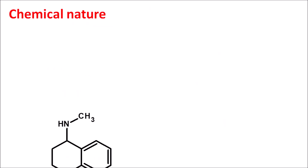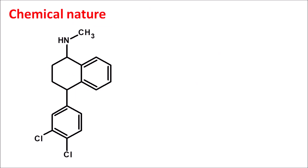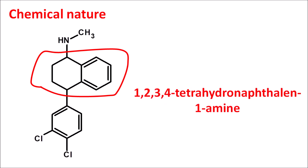Now let us look at the chemical nature of sertraline. This is the structure of sertraline. Here we can identify the tetralin ring, which is nothing but the tetrahydronaphthalene ring. At the first position of this naphthalene ring, an amine group is present, so we can write the suffix as 1,2,3,4-tetrahydronaphthalene-1-amine.